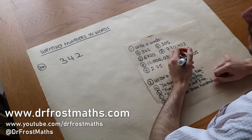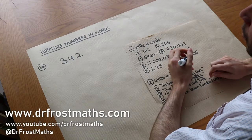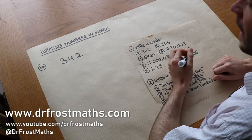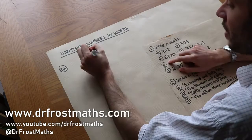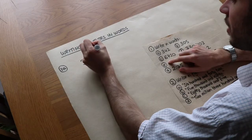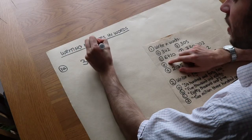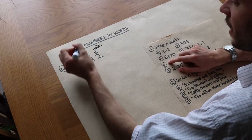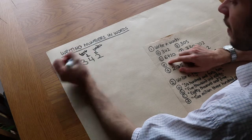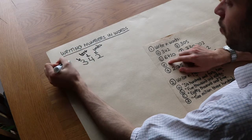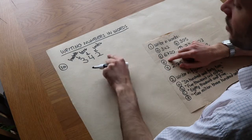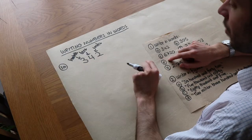Hello and welcome to this video on writing numbers in words. In the previous video we looked at the place value of digits. We saw that the rightmost digit was the units digit, the next digit was the tens digit, and the next one was the hundreds digit. We can use the place value to write numbers in words.